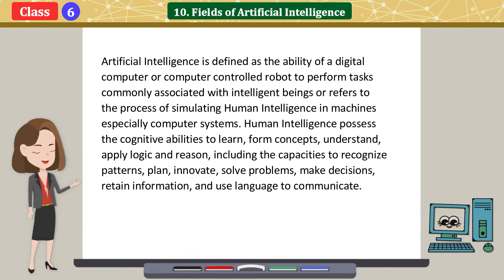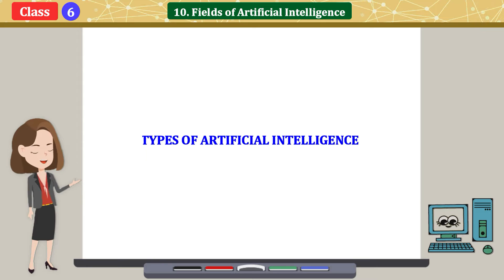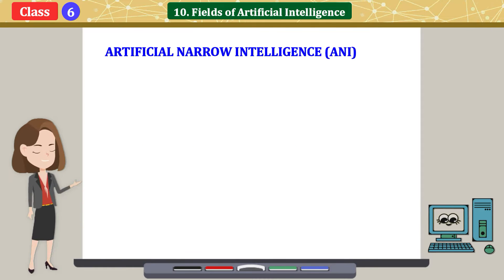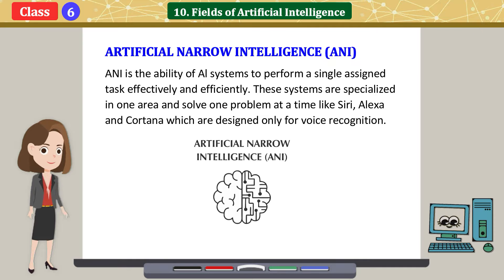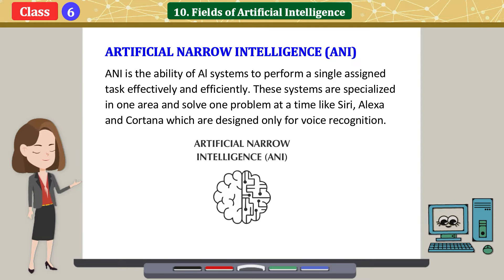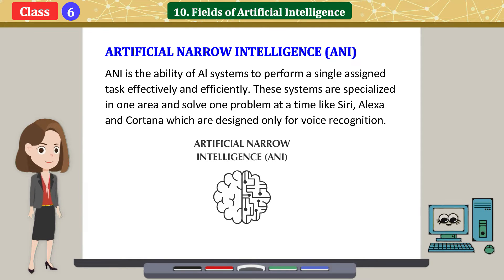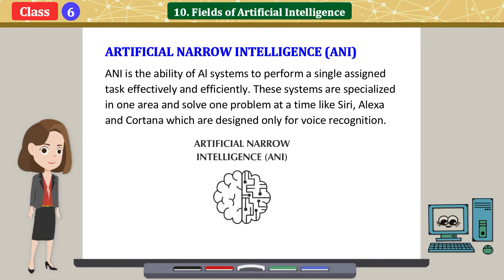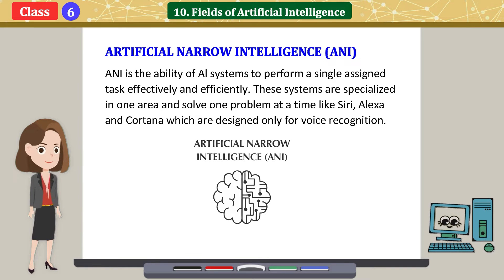Types of Artificial Intelligence. Artificial Narrow Intelligence (ANI) is the ability of AI systems to perform a single assigned task effectively and efficiently. These systems are specialized in one area and solve one problem at a time, like Siri, Alexa, and Cortana, which are designed only for voice recognition.